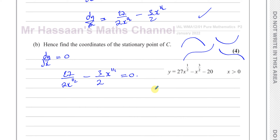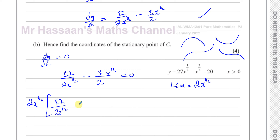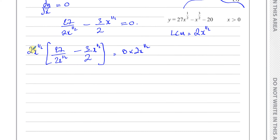To solve this equation and get rid of the fractions, the LCM of the denominators is 2x to the power of a half. Multiplying both sides by 2x to the power of a half, the denominators cancel: the first term leaves 27, and for the second term the 2s cancel, leaving 3 times x to the power of a half times x to the power of a half, which is x to the power of 1, or just x.